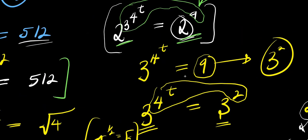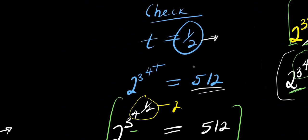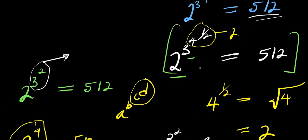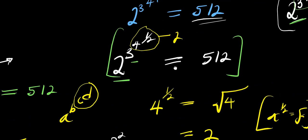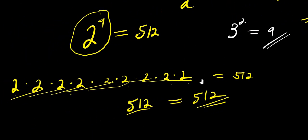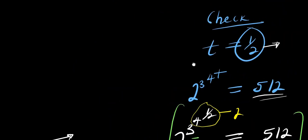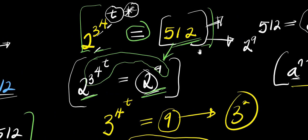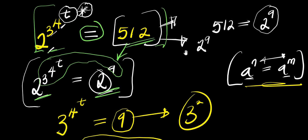After inserting t = 1/2 back into the original equation, we ended up with 512 on both sides of the equation. That is how you solve this type of exponential equation. The first and most important step is to ensure that both sides are expressed in exponential form.